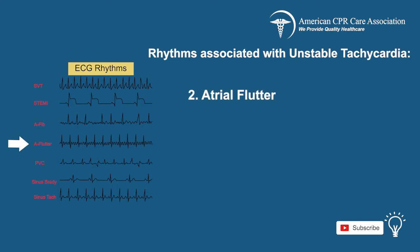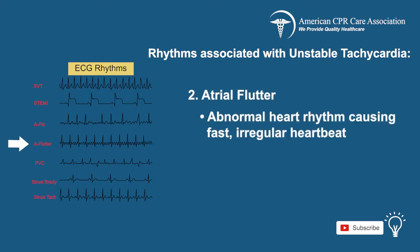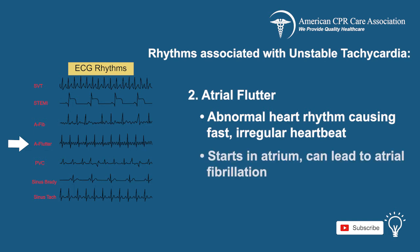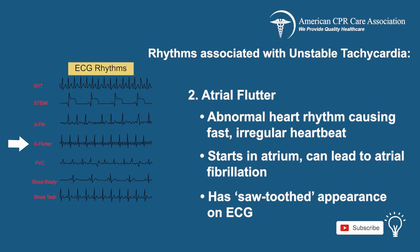Another rhythm is atrial flutter. This is an abnormal heart rhythm causing a fast and irregular heartbeat. Atrial flutter starts in the atrium and it can lead to atrial fibrillation. It usually has a saw-toothed appearance on the ECG.